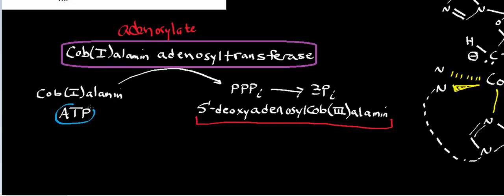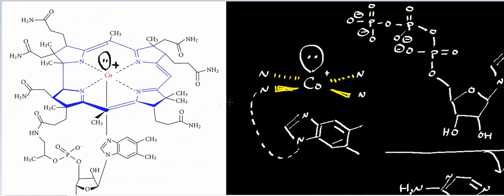This reaction requires adenosine triphosphate — the adenosyl donor is going to be ATP. We're going to look at the mechanism of this enzyme in this video. It's a really simple mechanism. Basically, notice we're starting with vitamin B12 or cobalamin in the plus-one oxidation state, and in that state B12 is what we refer to as a super nucleophile — but only when the cobalt is surrounded by the corrin ring system and when it's in the plus-one oxidation state.